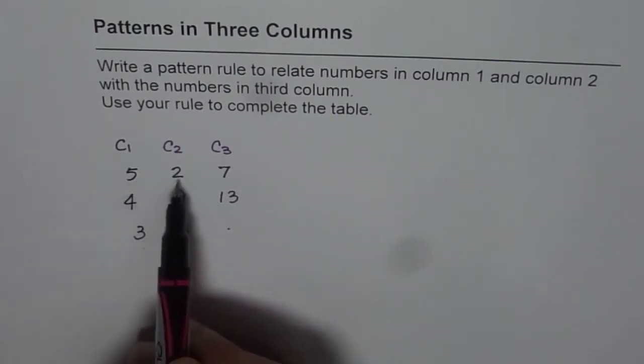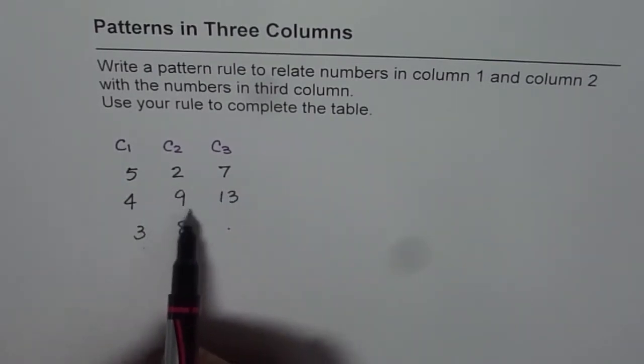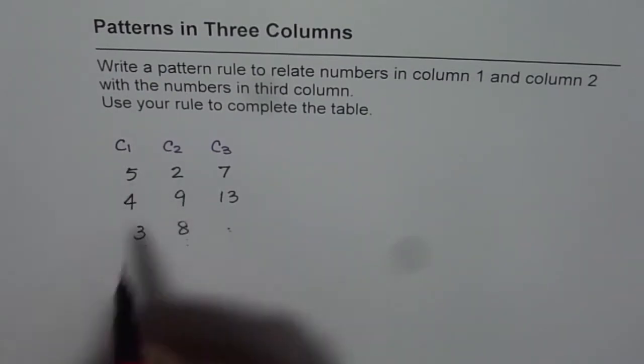So numbers are five, two and seven, four, nine, thirteen, three, eight and what should come. We can figure out this number once we know the rule.